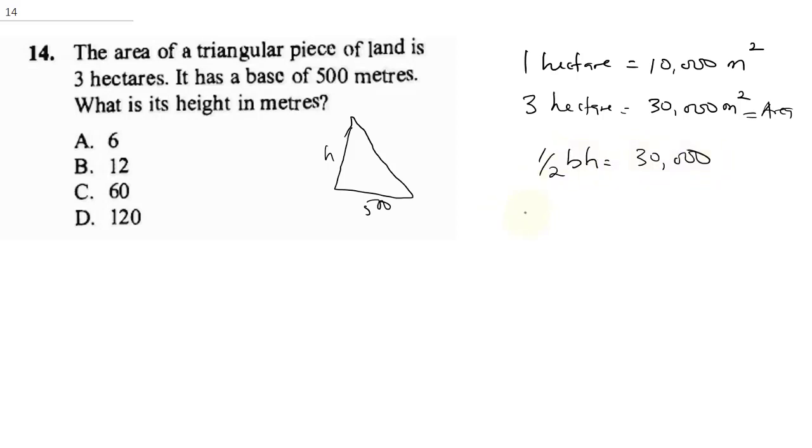So for us to do this, we're going to do half times the base, which is 500, times the height equals 30,000. In order to solve this, we're going to cross multiply. This will be 500H is equal to 30,000 multiplied by 2. So this will be 500H is equal to 60,000.